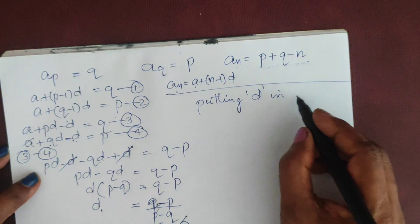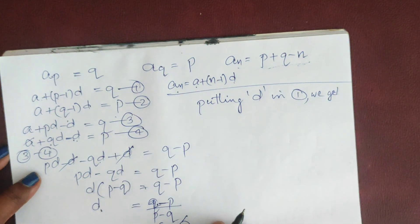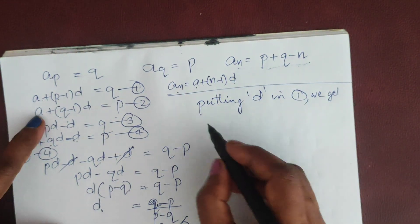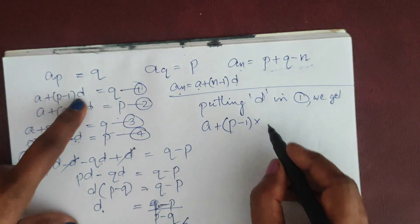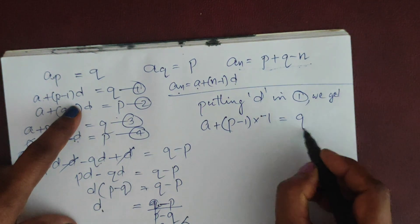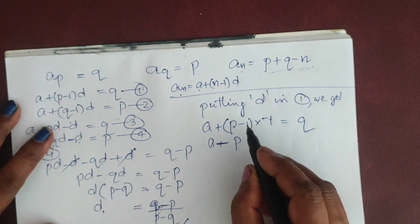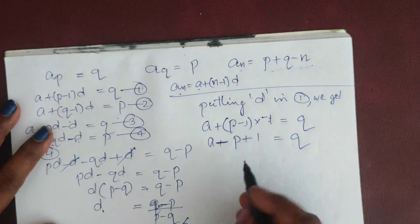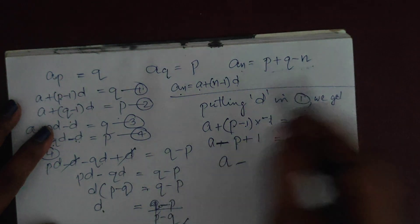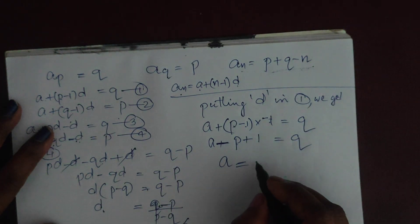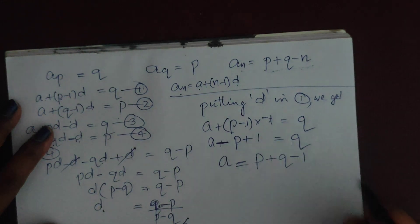Substituting d = -1 into equation 1: a + (p - 1)×(-1) = q, giving a - p + 1 = q. Transposing, a = q + p - 1, so a = p + q - 1.